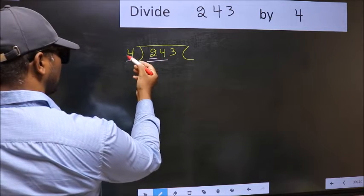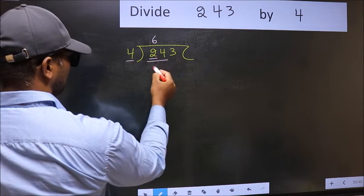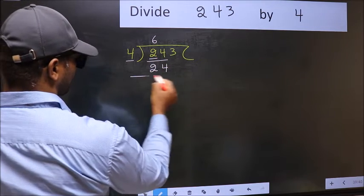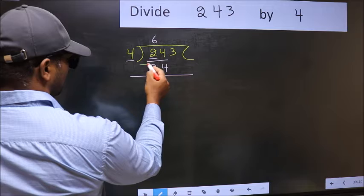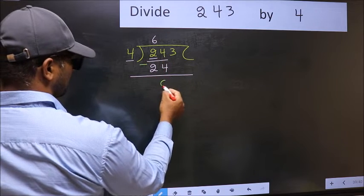When do we get 24 in the 4 table? 4, 6, 24. Now you should subtract. 24 minus 24, 0.